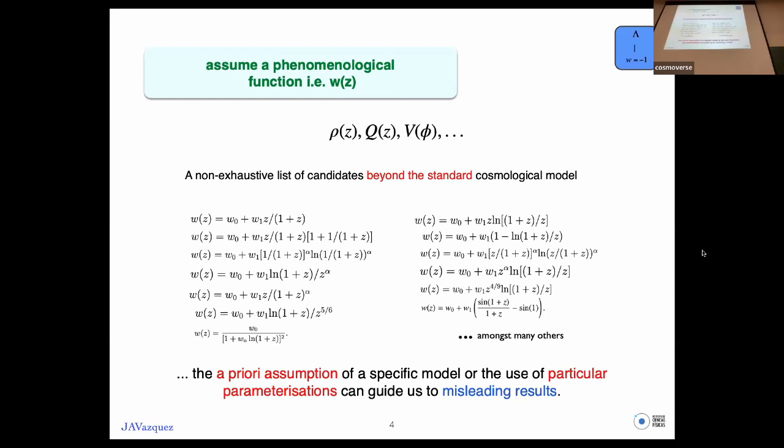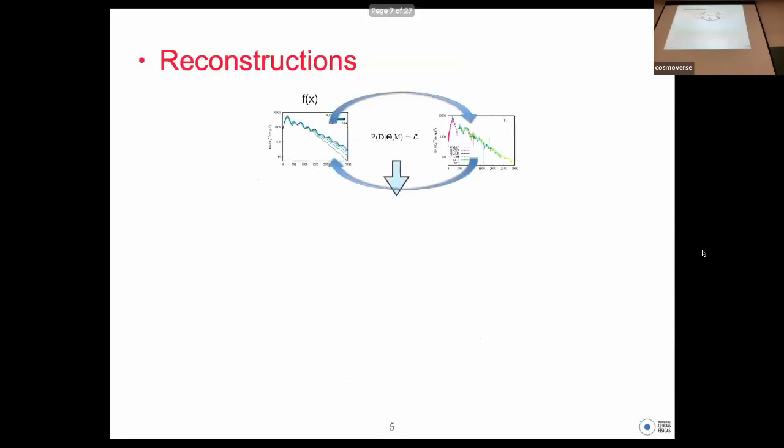Instead of suggesting a particular function, constraining its parameters, and looking at the observations, we might look the other way. We take the data - different surveys, CMB observations, all the data sets available - and then we ask the data which is the preferred function.